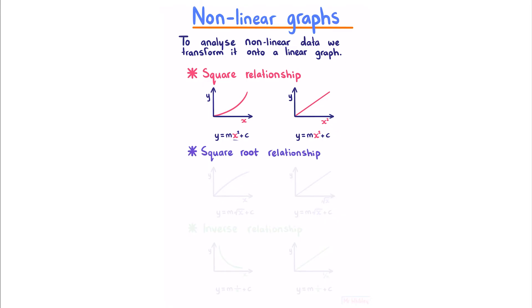For a square root relationship, we can write this in the form y equals m square root x plus c, where once again we have a square root relationship between y and x, but we have a linear relationship between y and the square root of x.